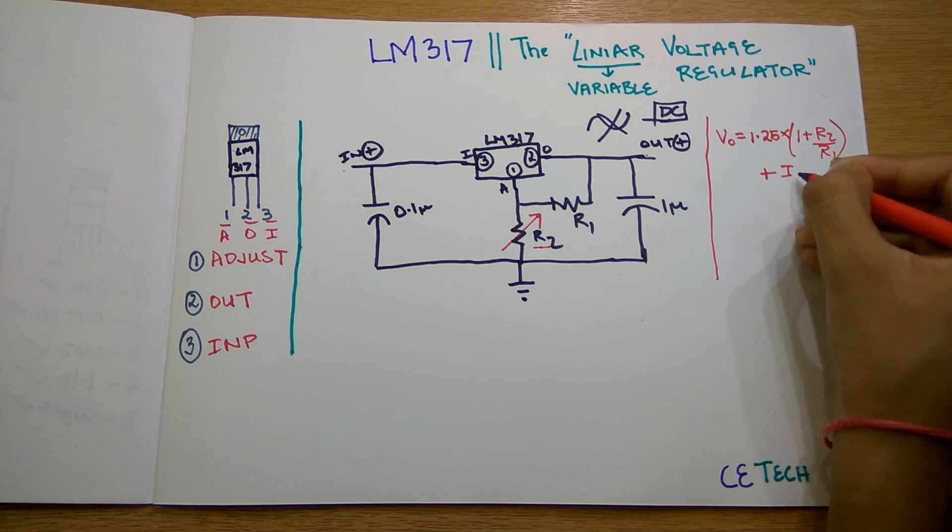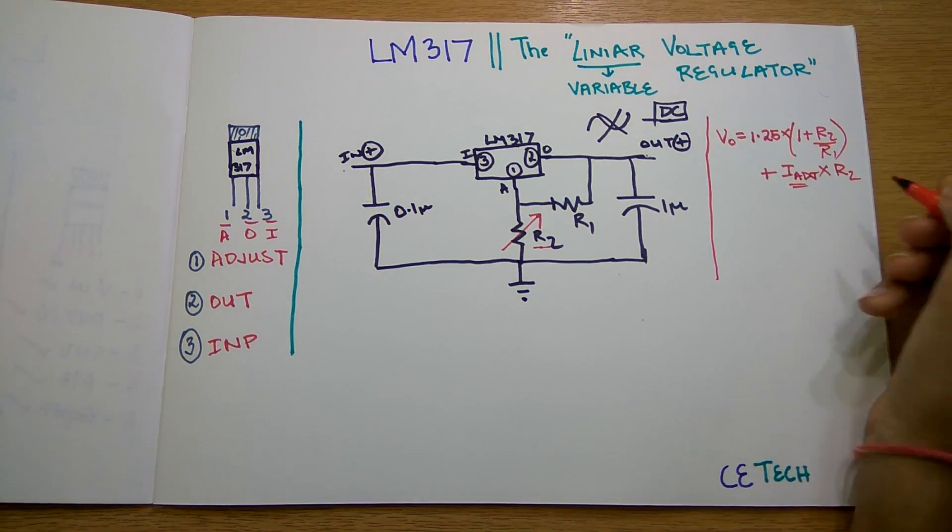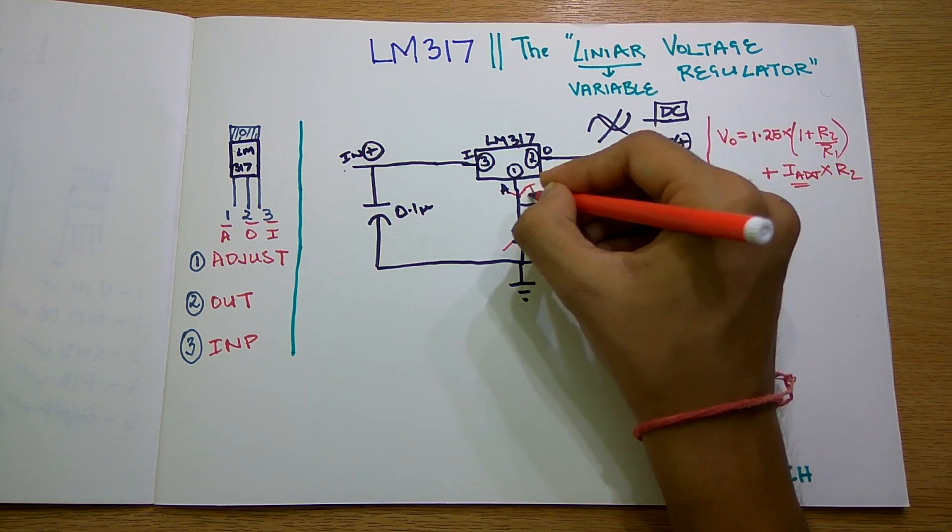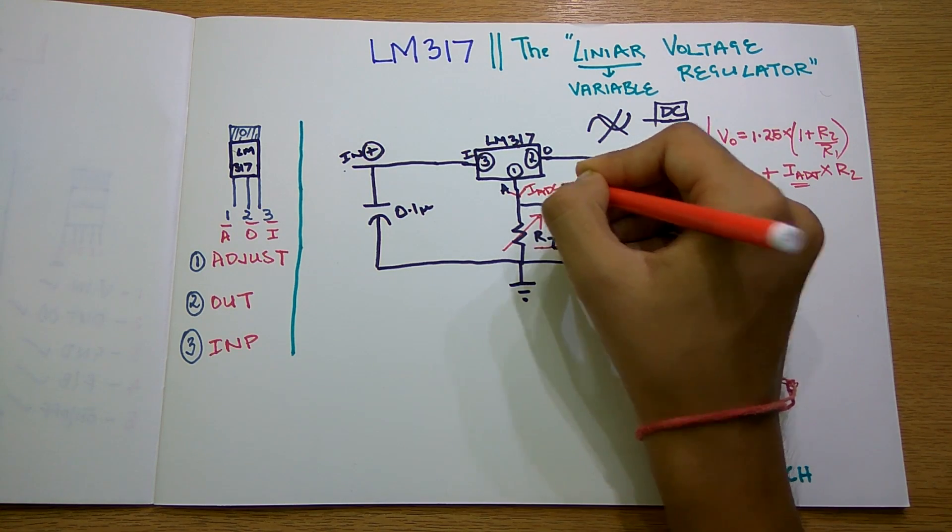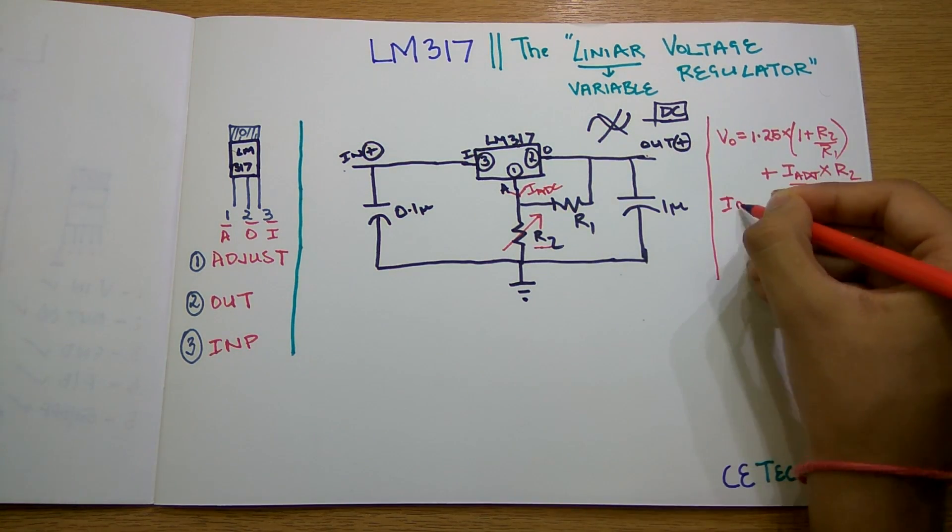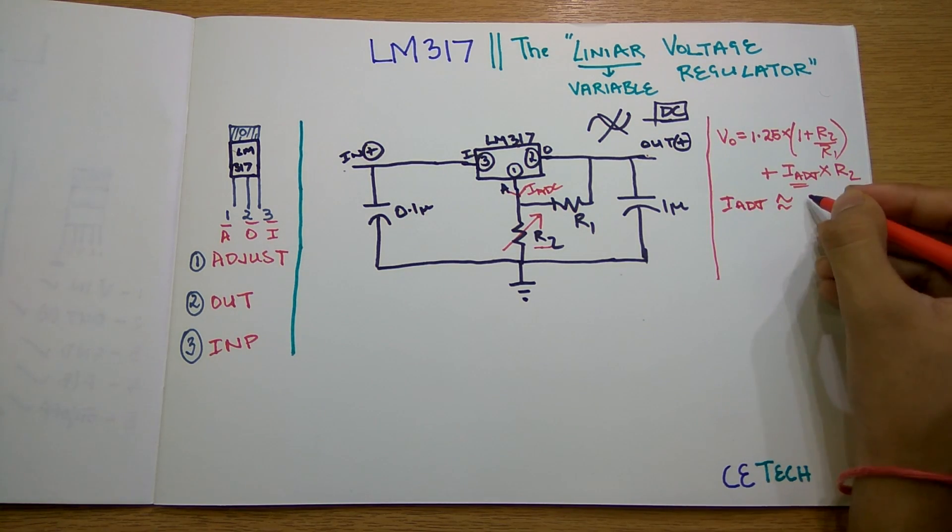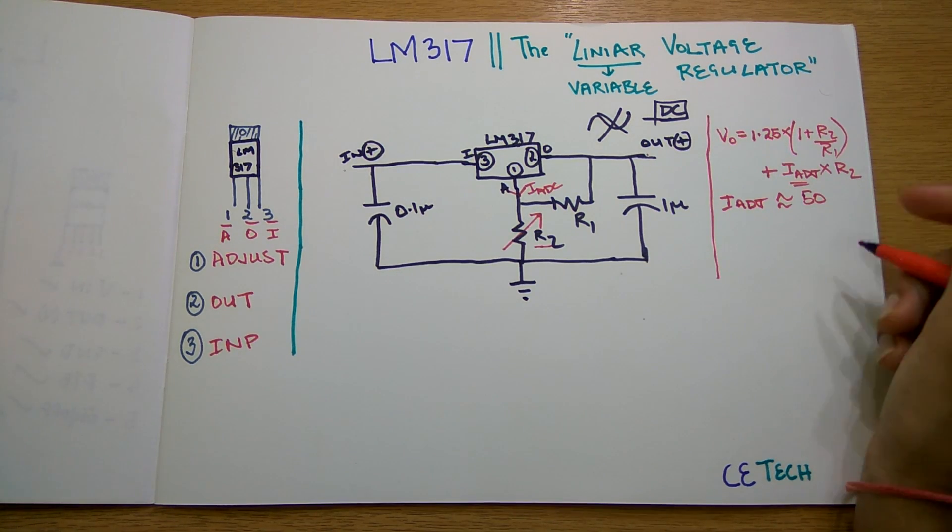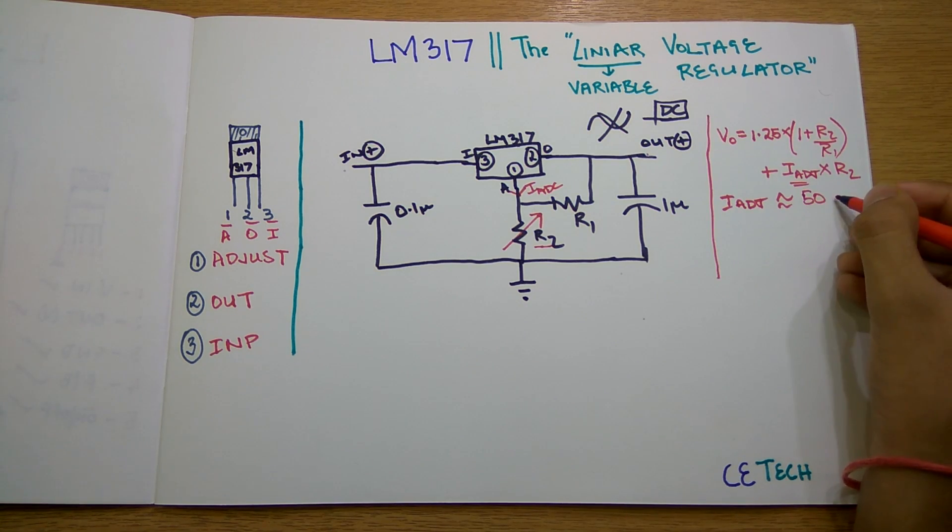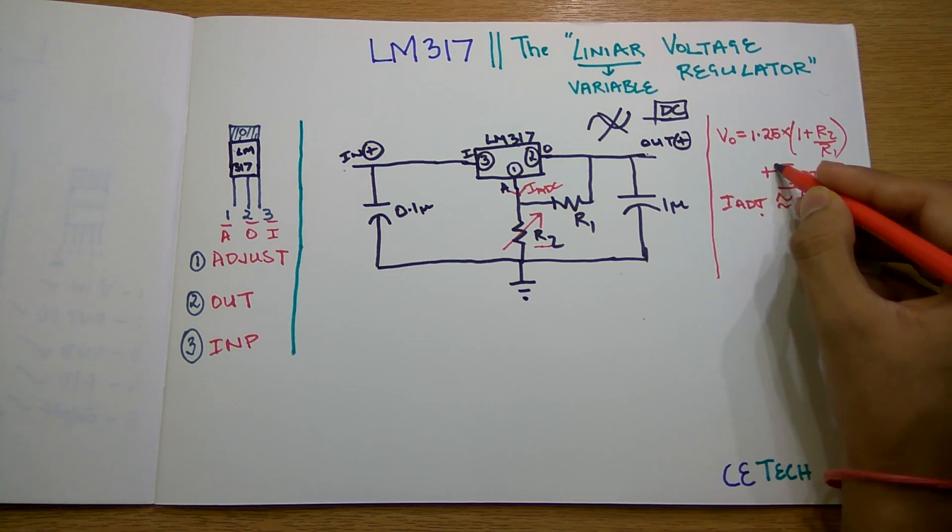You may think what this I_adjust is. It is approximately less than 100 microamperes, so approximately equal to 50 microamperes. When we plug in this value it becomes very small, so we neglect this value.